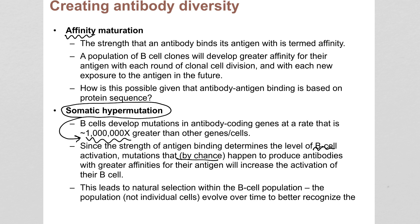Binding to the antigen is what triggers cell division, so if your antibody by chance has higher affinity, it's going to bind the antigen more, which is going to make it divide more. If it doesn't have high affinity, it's just not going to get copied and will fade away. You end up getting a natural selection effect where the B cells that happen to have the best antibodies, just by luck, are copied and divide the most. They spread throughout the body and make the immune response stronger.